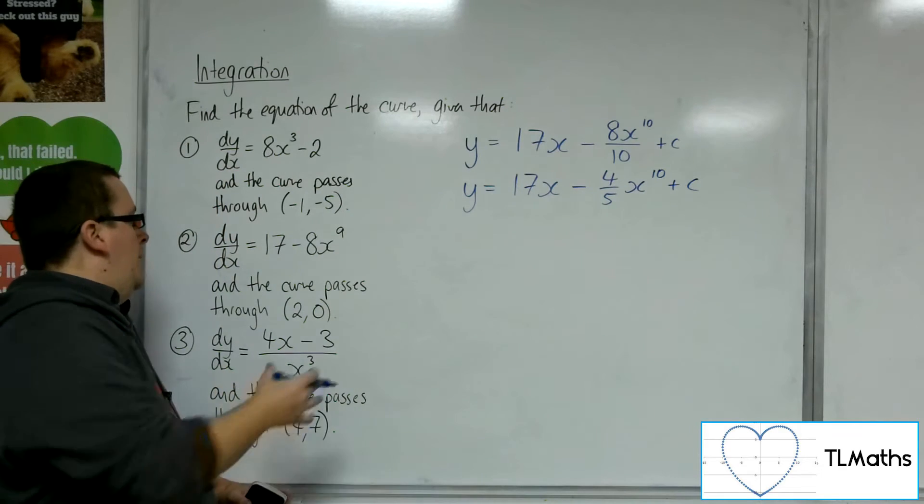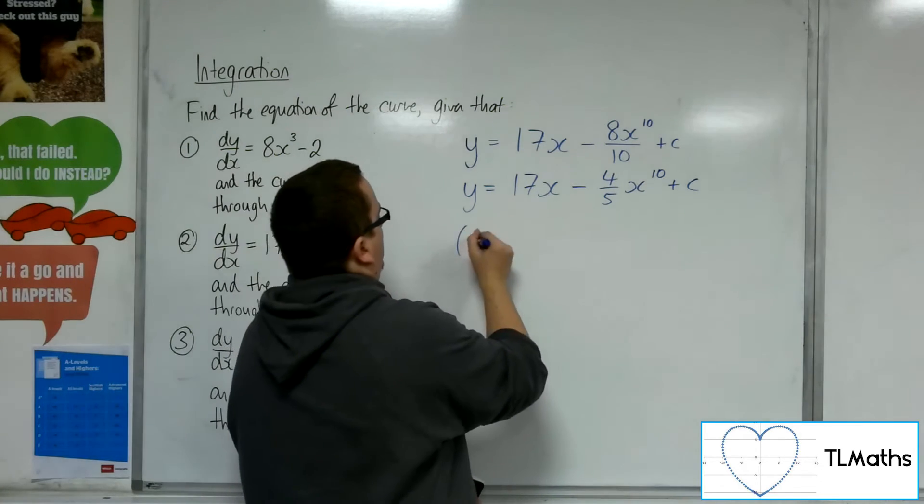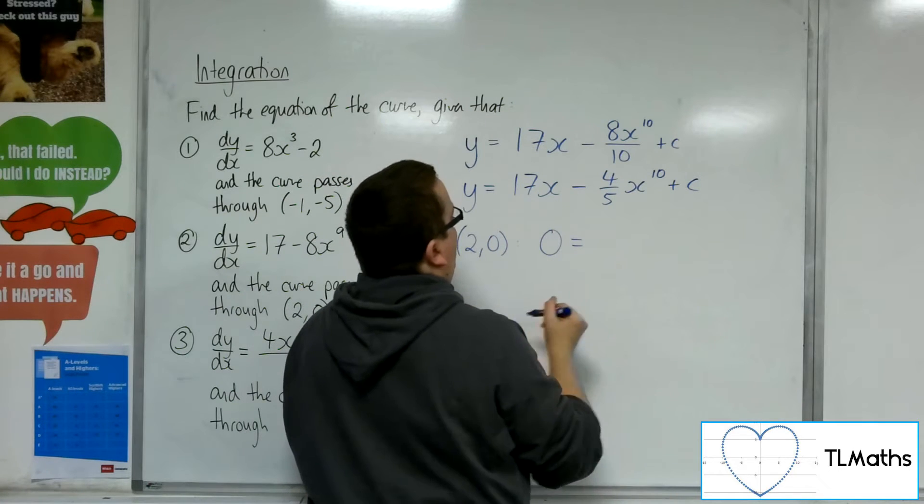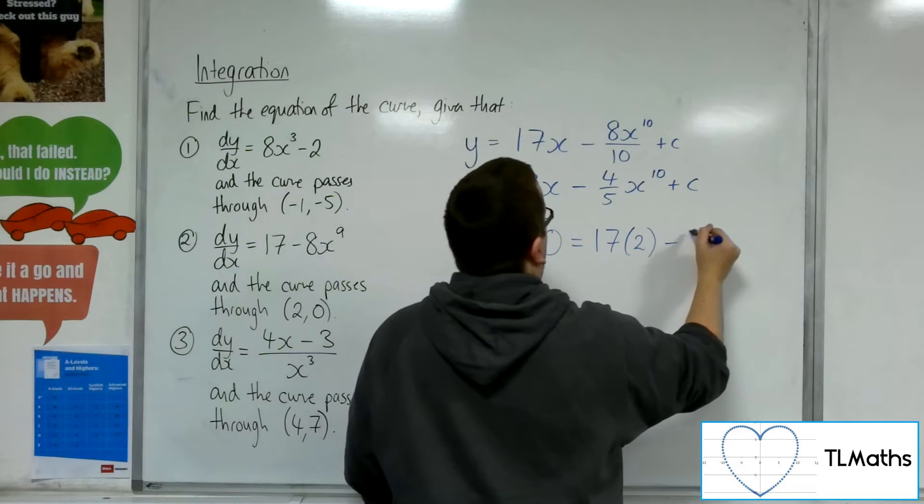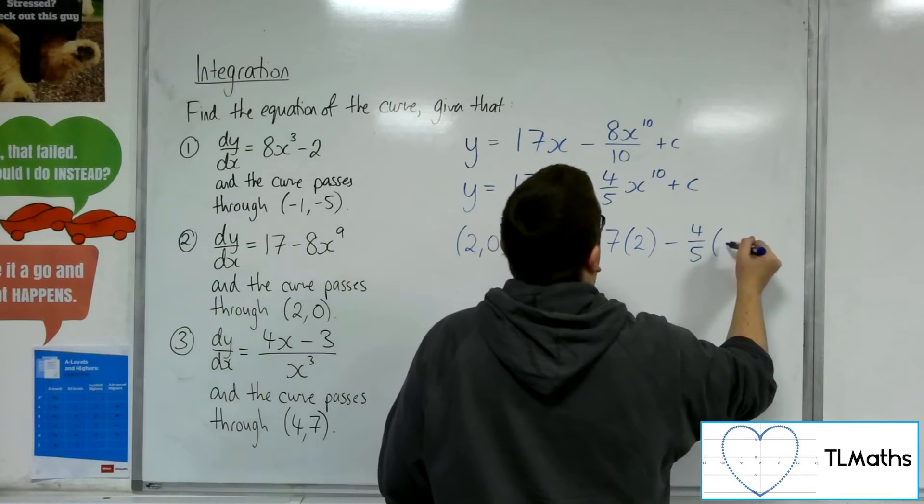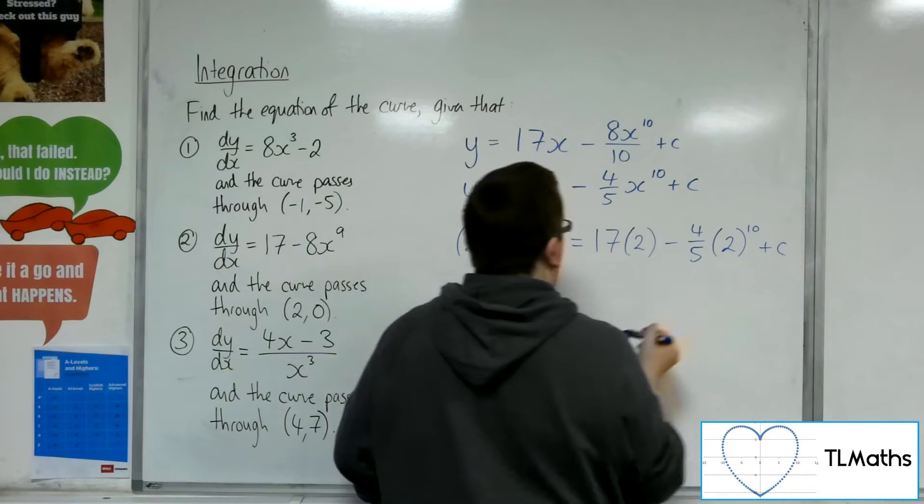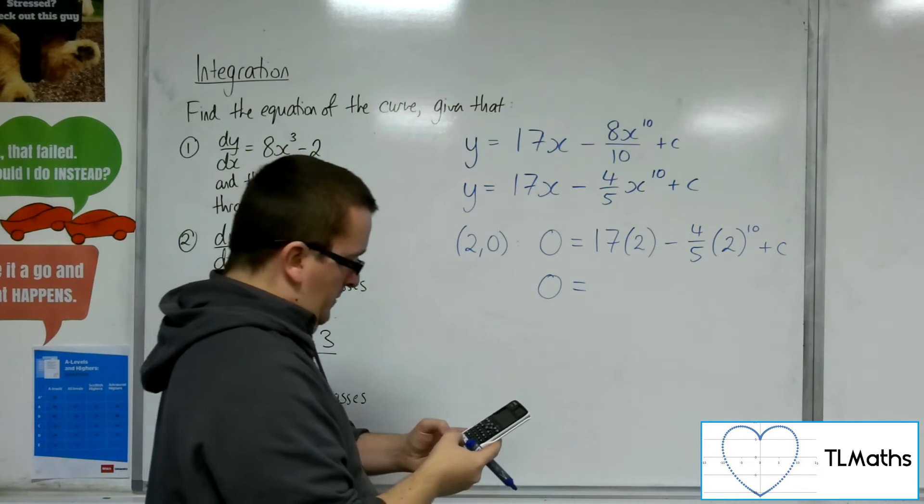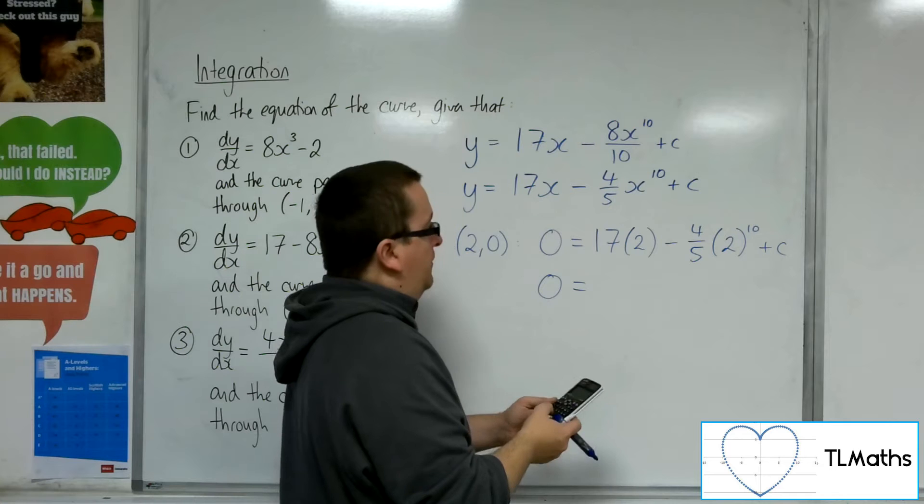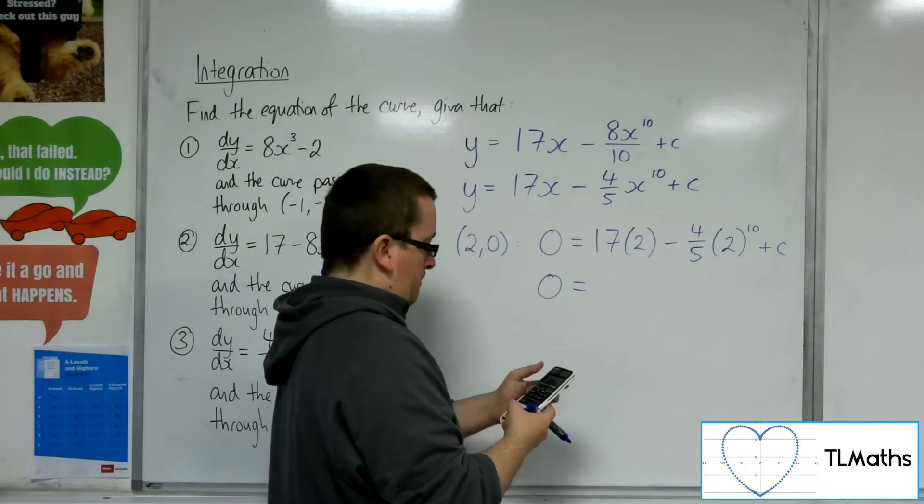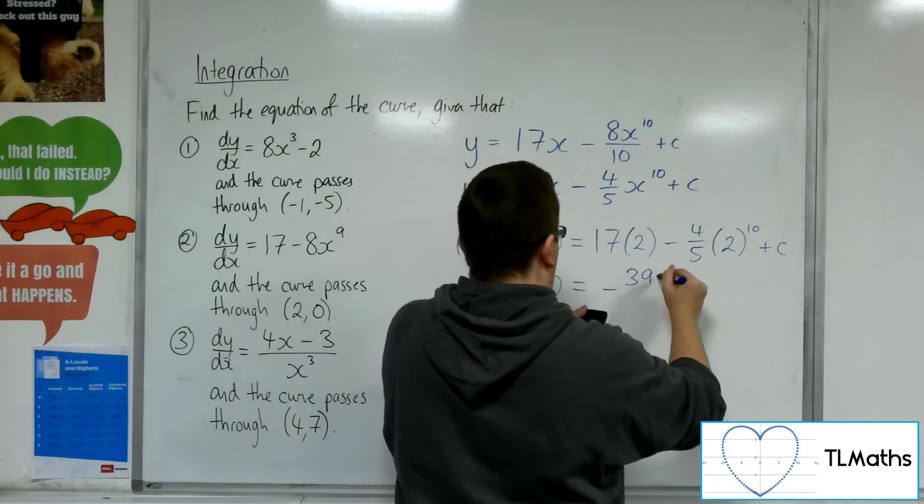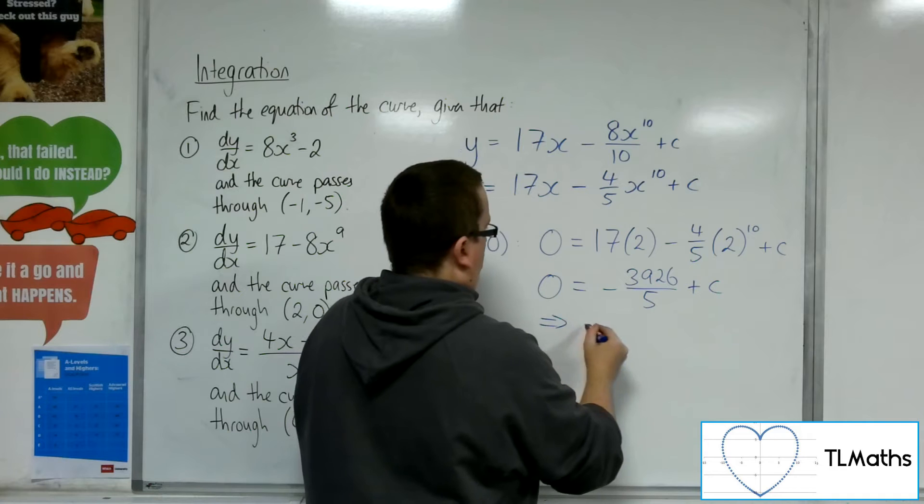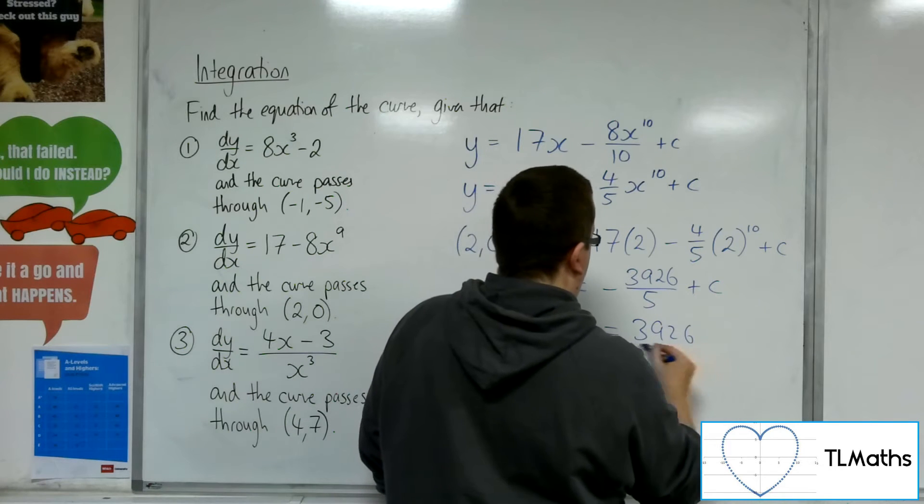So I want to substitute in the (2, 0) here. So the y is 0. The x is 2, so 17 lots of 2, take away 4/5 times 2¹⁰ plus c. So we've got 17 times 2, take away 4/5 of 2 to the power of 10. So that's -3926/5 + c. So c is 3926/5.